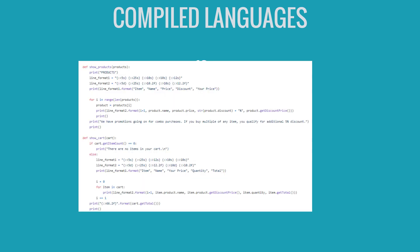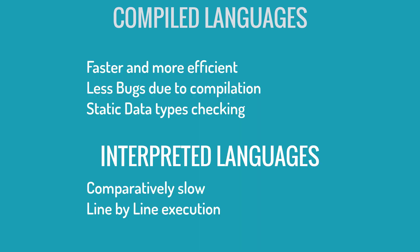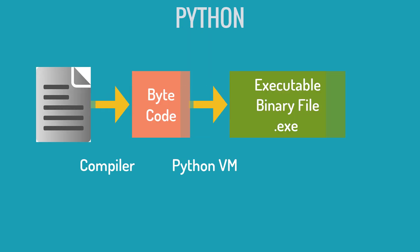Source code is just a file with a bunch of instructions for a specific language. Interpreted languages, on the other hand, are executed one line at a time. It reads the first line, then it executes that line, and then only it moves to the second line and repeats the same process for each line in the source code file.